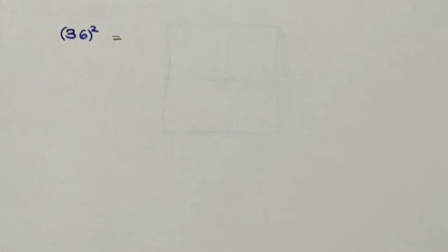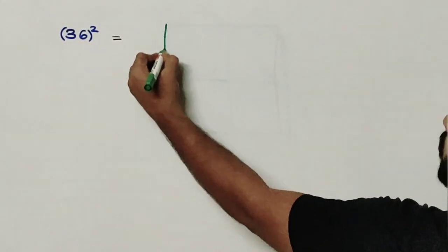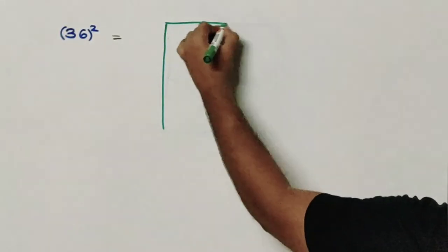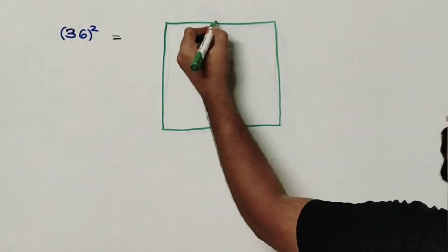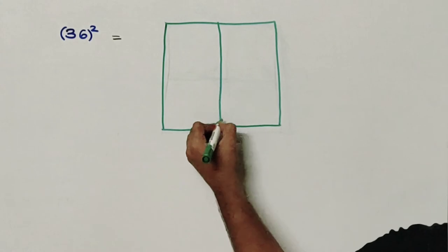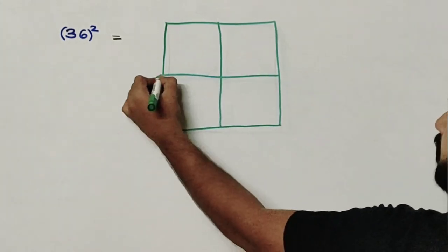So let us see the square of the first two digit number which is 36. So 36 consists of two digits. So we need to form a square and divide it into two rows and two columns which makes it a four block.